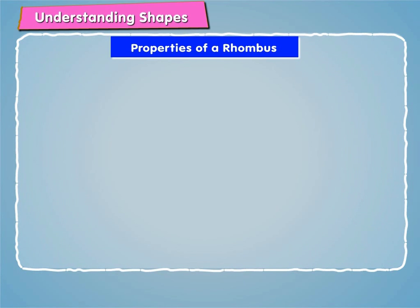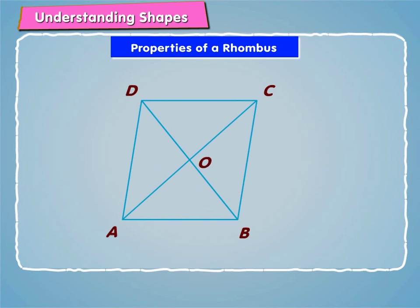Learn some of the properties of a rhombus. As we know that a rhombus is a parallelogram whose adjacent sides are equal, so rhombus has all the properties of a parallelogram.